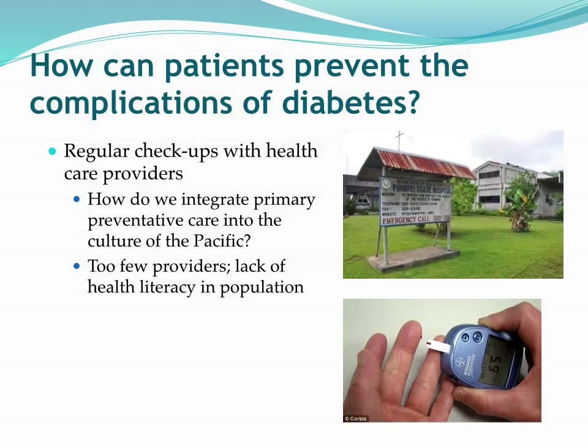For example, in some Pacific Island jurisdictions I've worked in, people assume that diabetes — which they often call 'the sugar' — is simply an offshoot of the natural aging process. They don't understand that it's something that can be prevented. This idea is not unique to the Pacific — I've seen it in the Caribbean and Latin America as well. It's something our public health agencies can work on beginning with school-age children, because it's important that we educate people at a very young age.